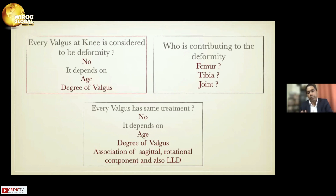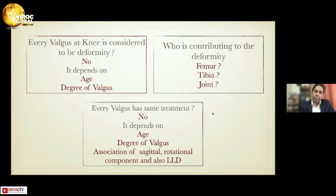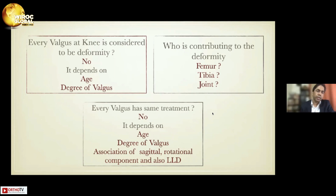We may face these questions: is every valgus at the knee considered a deformity? No — it depends on age and the degree of valgus. Who is contributing to the deformity — the femur, tibia, or the joint? Does every valgus have the same treatment? No. It depends on age, degree of valgus, association of sagittal and rotational components, and limb-length discrepancy. We need to consider all these facts before deciding on our management protocol or the type of fixation to use.